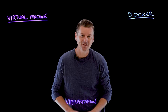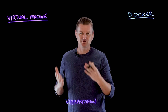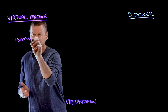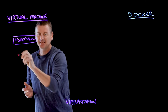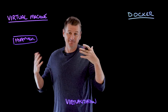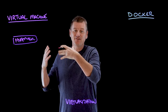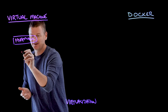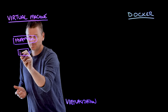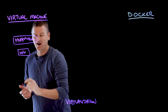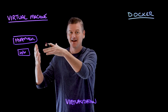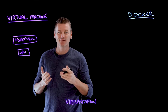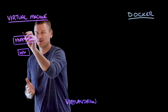For VMs, that abstraction layer or abstraction software is called a hypervisor. A hypervisor is simply something that helps a virtual machine emulate a physical computer. Underneath the hypervisor, we have some hardware, and the hypervisor manages the allocation of resources between different virtual machines on that single physical host.